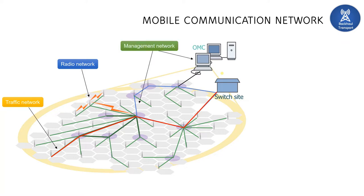Then the management network. Why do we need a management network separately? Because the mobile communication network consists of large equipment — routers, base stations, switches, base station controllers, HLR, VLR, MSC, media gateway. All these nodes have several kinds of alarms, events, and performance monitors. These performance parameters are stored in counters, and we need to fetch all this information from these nodes and dump it into the OMC center. If you maintain a management network, then only we can sit in one place and view the entire network from across the globe.